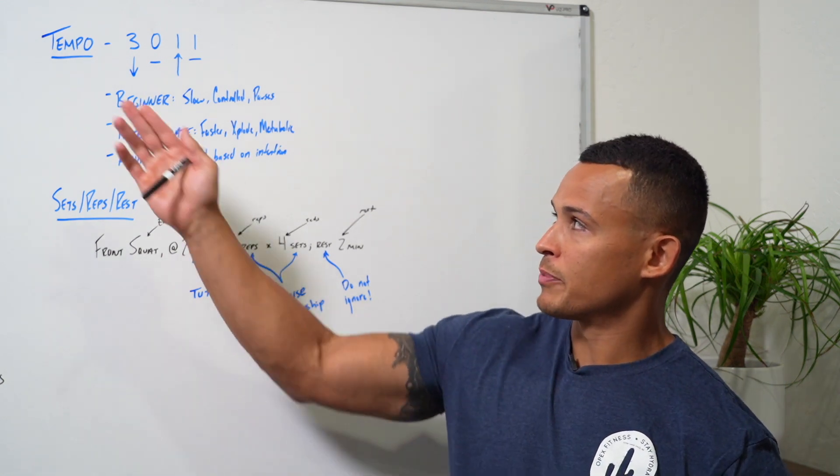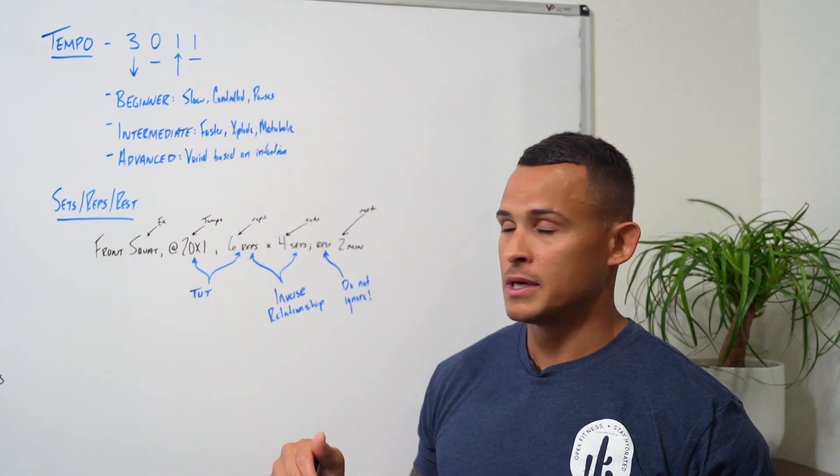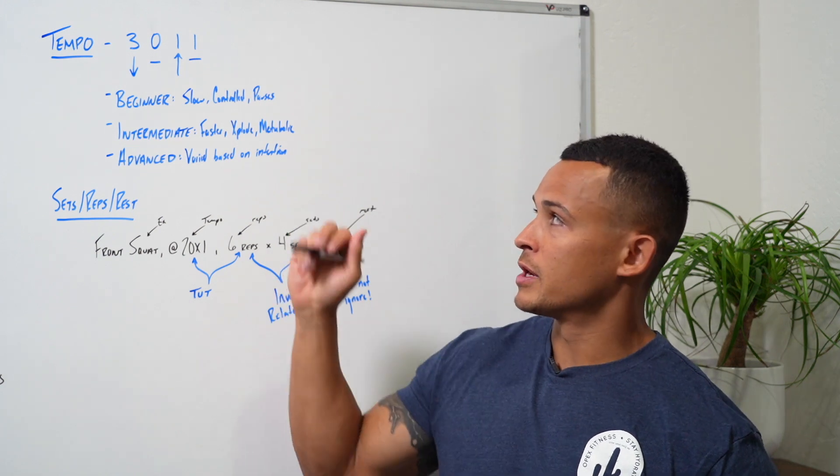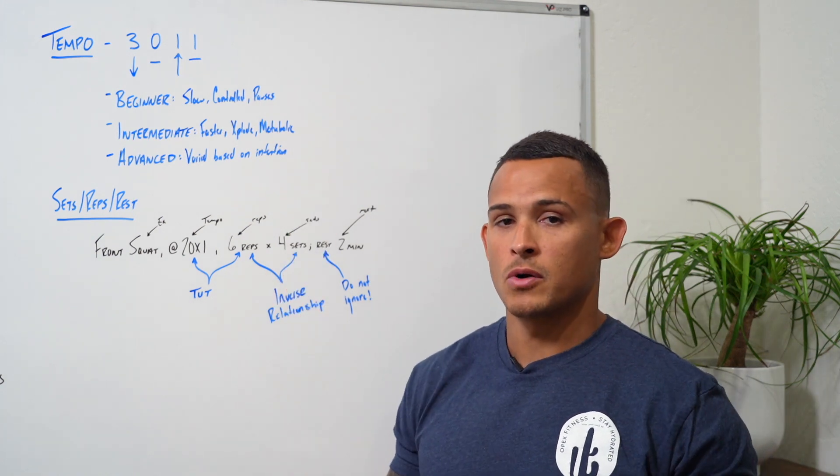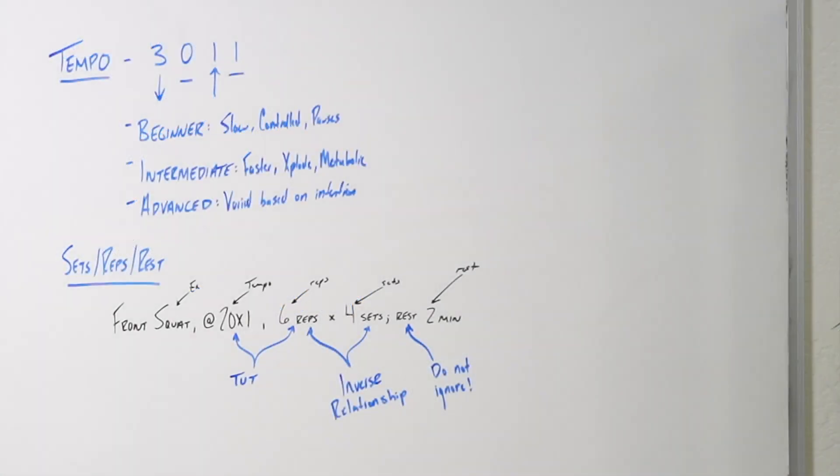So tempo, represented by four numbers: the first number is the eccentric phase of the movement. The second number is the pause at the bottom of the movement. The third number is the speed of the concentric, or coming up in the movement. And then finally, the fourth number is the pause at the top of the movement.